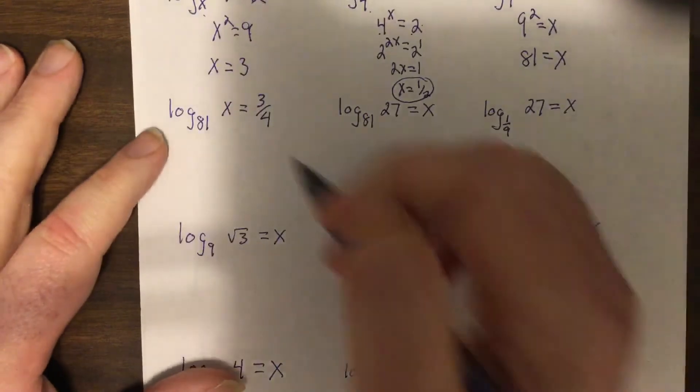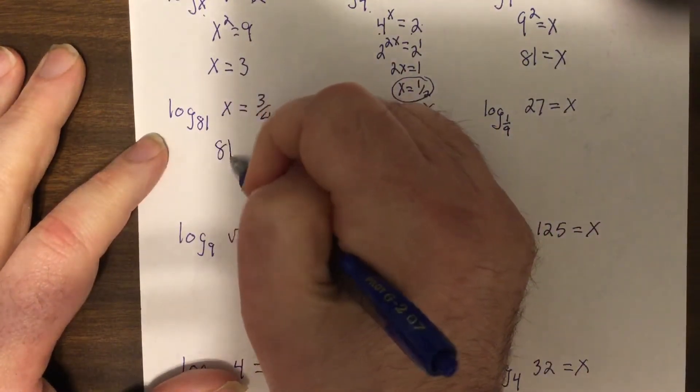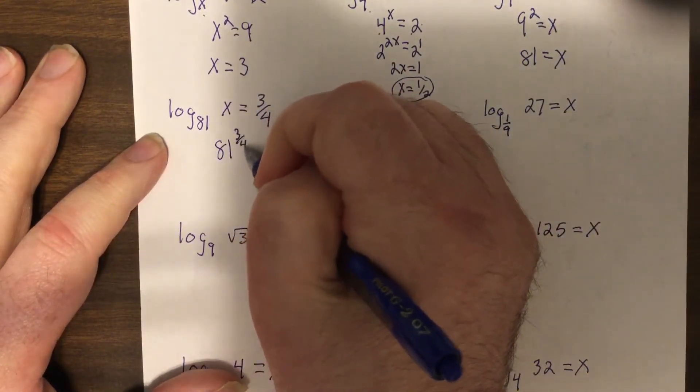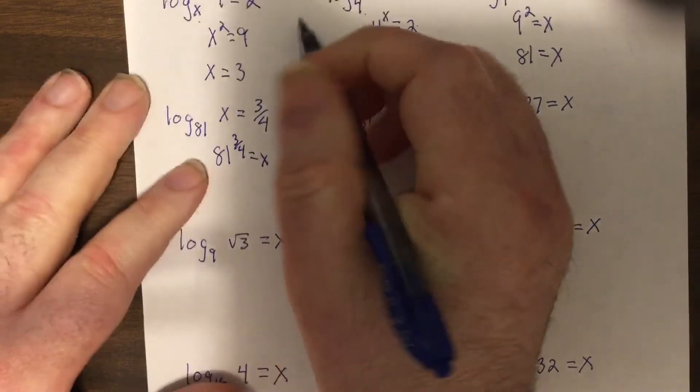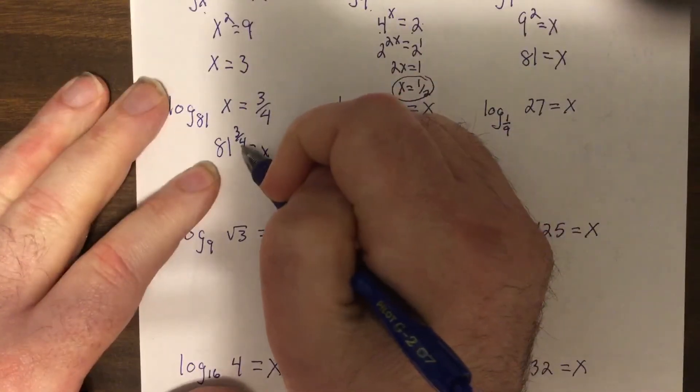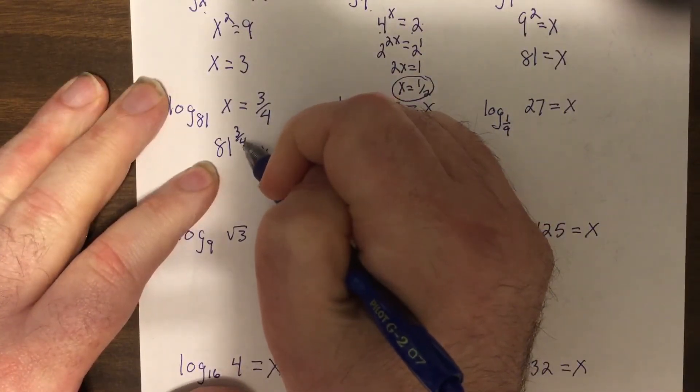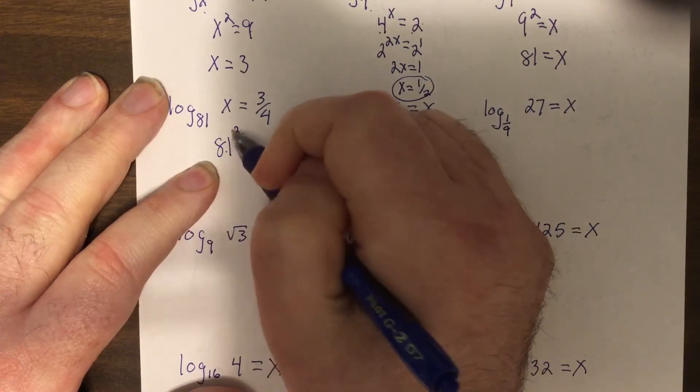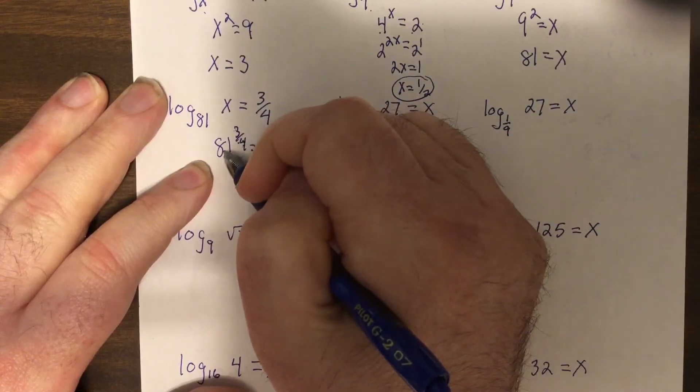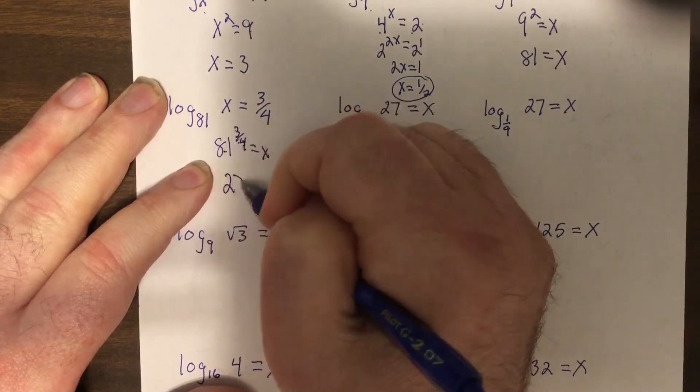So this one, 81 to the three fourths equals x. If you remember, the bottom number is the radical, so it'd be fourth root, the top number is your normal power, so cube. So the fourth root of 81 is three, three cubed is 27.